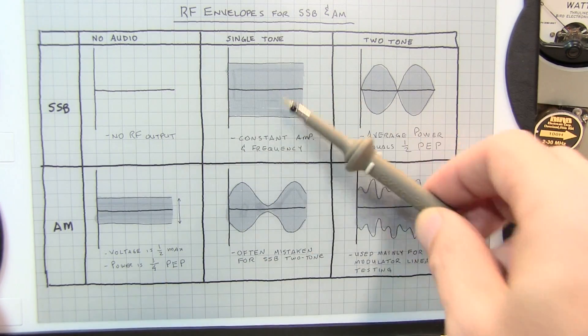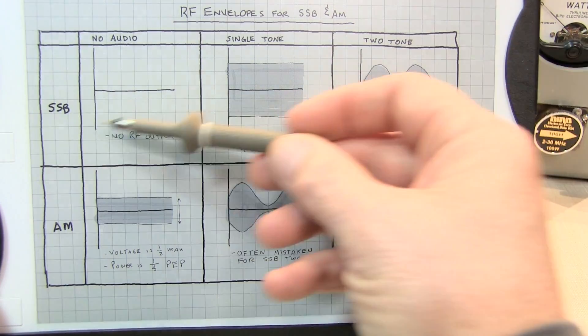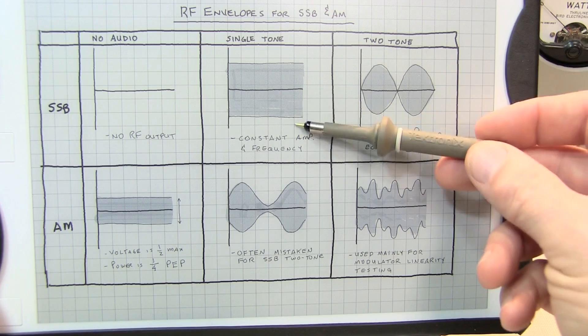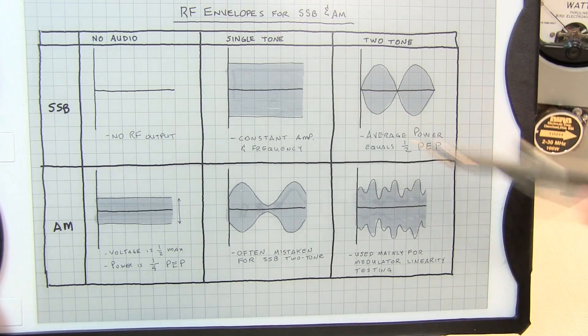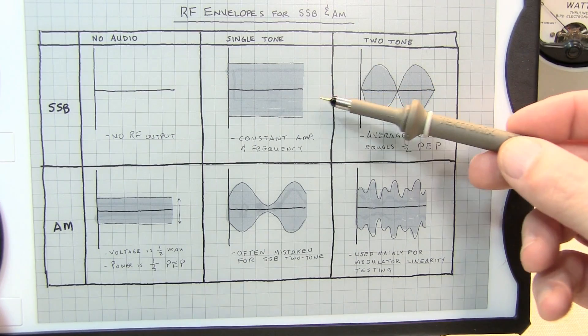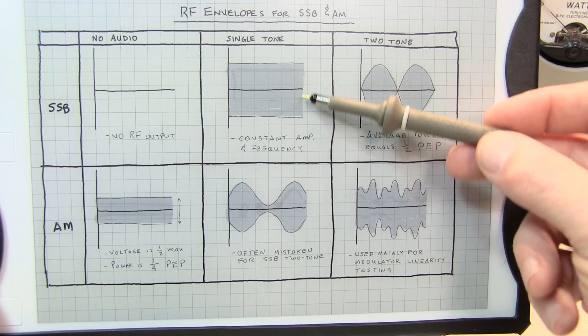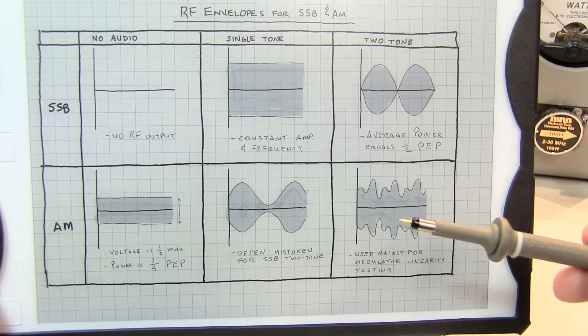So certainly, a single tone going into a single sideband transmitter could be used to measure, essentially, the peak envelope power directly with an RF power meter. However, in many cases, or I should say in some cases, a single sideband transmitter may not be rated to put out its full peak envelope power in a contiguous fashion.